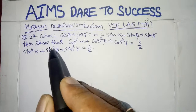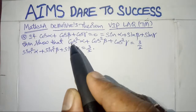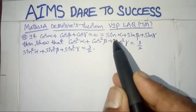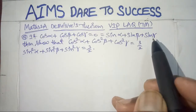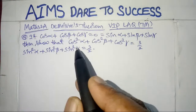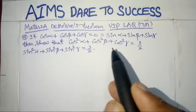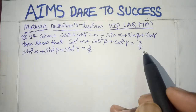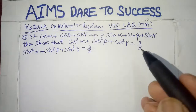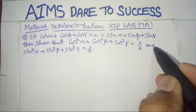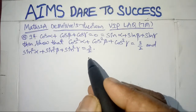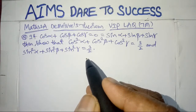The problem is: if cos α + cos β + cos γ = 0, which is also equal to sin α + sin β + sin γ = 0, then show that cos²α + cos²β + cos²γ = 3/2, and sin²α + sin²β + sin²γ = 3/2.